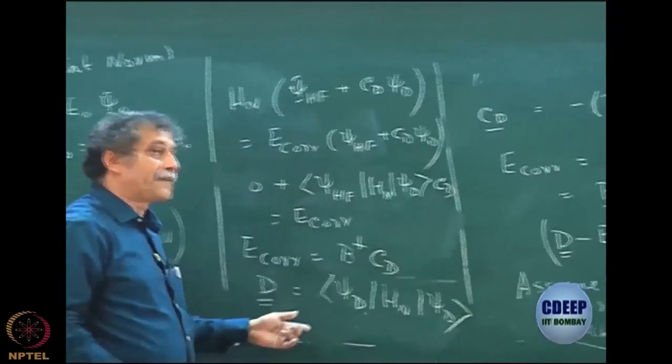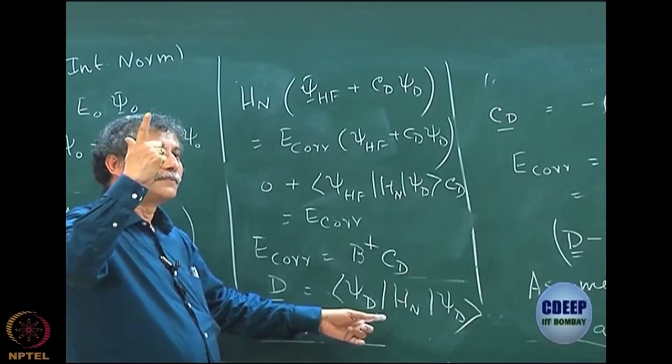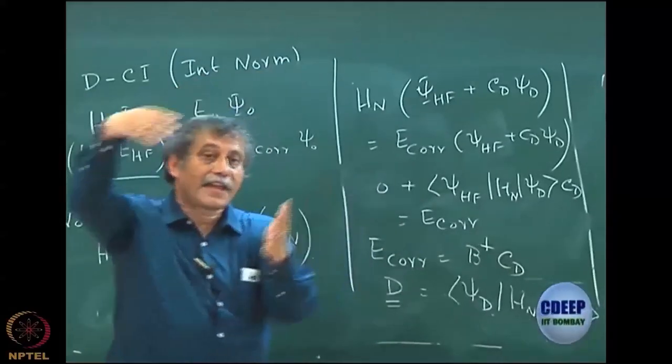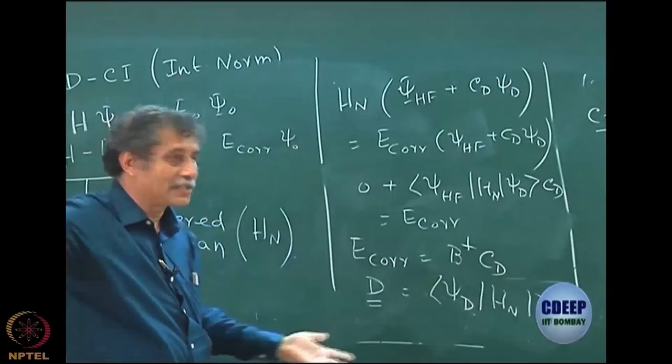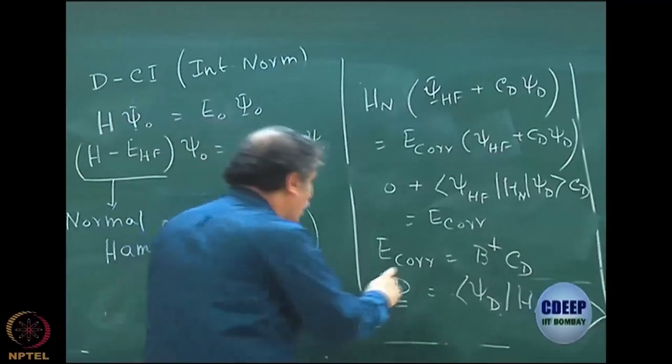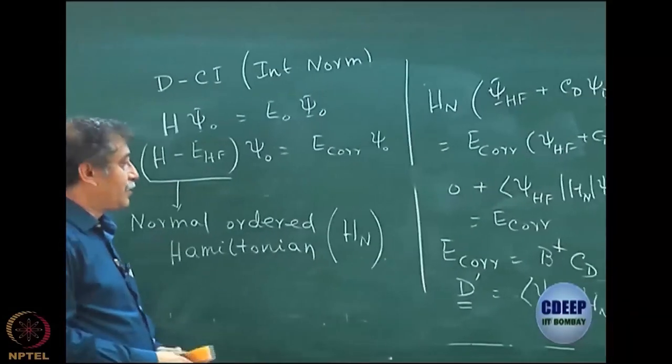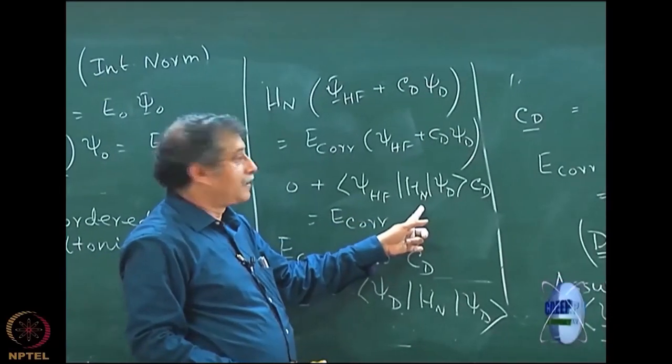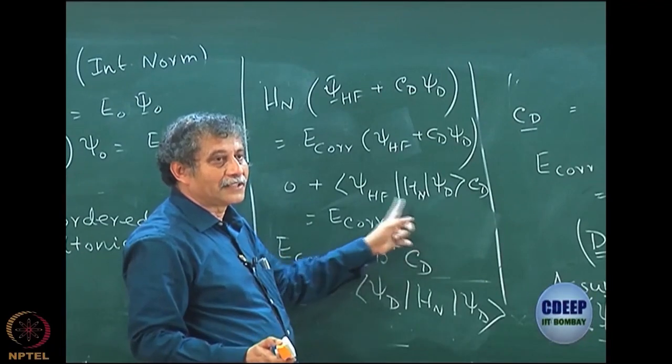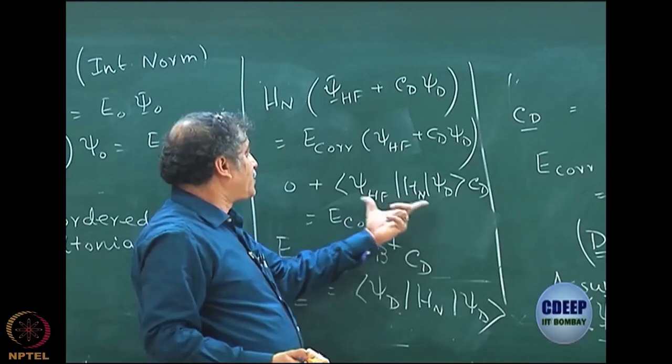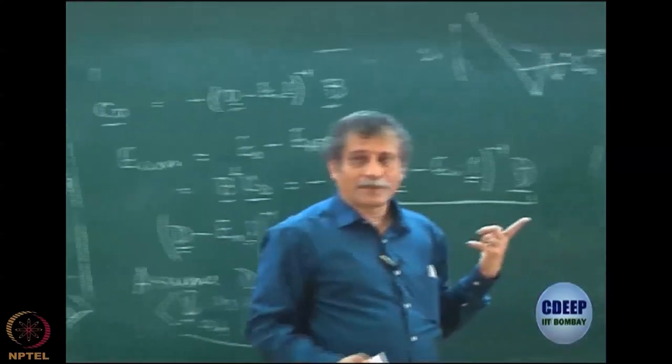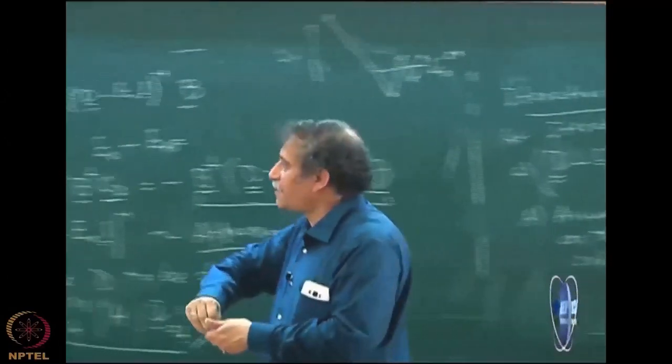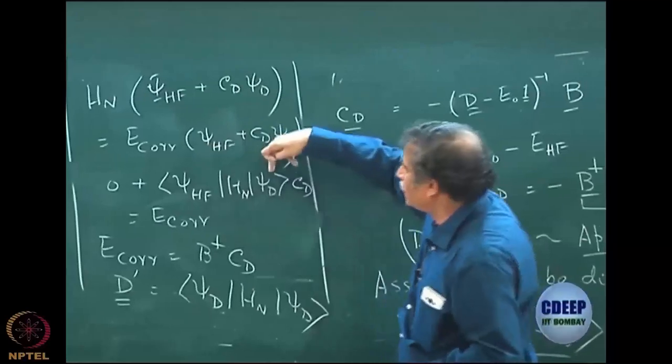So this D is now defined as psi Hartree-Fock, sorry, psi doubles, H_N psi doubles. So what is the difference? The difference is that this D does not have E Hartree-Fock. So whatever is the old D, I am subtracting E Hartree-Fock from the diagonal, only from the diagonal of course, because number can be only subtracted from the diagonal. So I define my new D, I can call it D', which is the H_N and here it does not matter fortunately. You know why? Because you can only do from the diagonal, there is no diagonal element here.